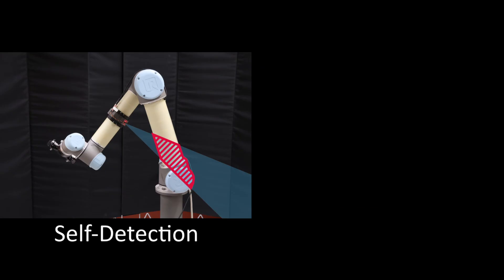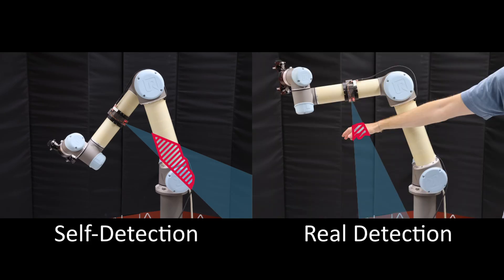A key challenge with arm-mounted sensors is being able to differentiate between the robot itself and other unknown objects.